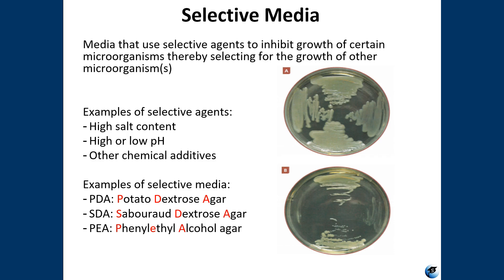If you go to the next step, that step involves media that almost entirely inhibit the growth of unwanted microbes — not entirely, but for the most part — and they support the growth of the organism of interest by supplying nutrients and reducing competition. These are selective media.